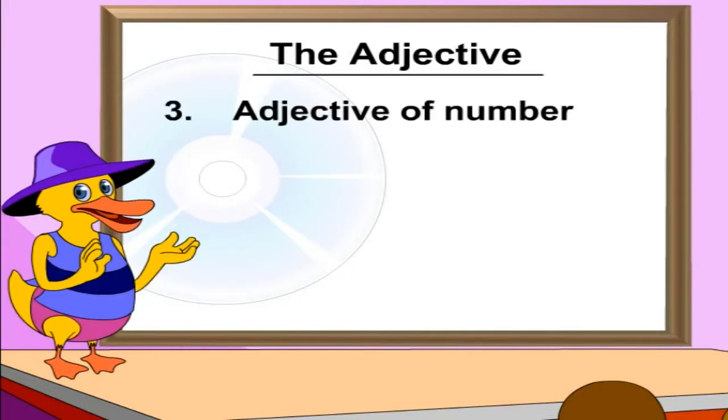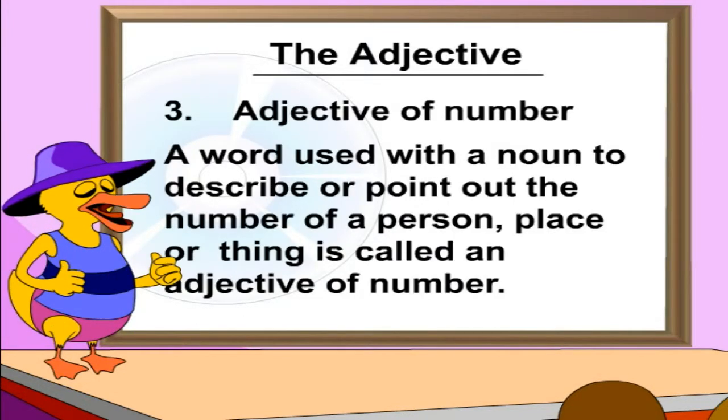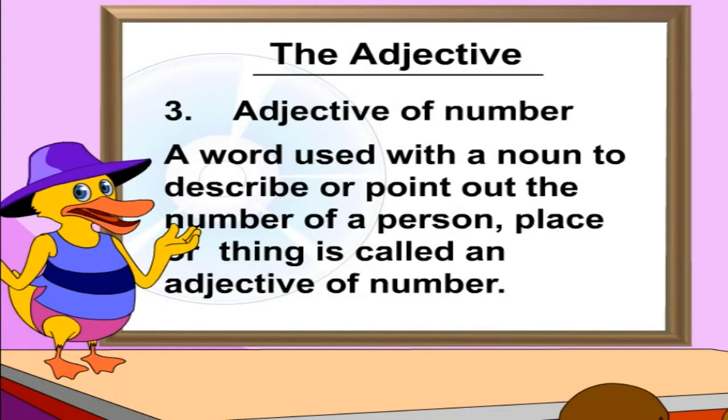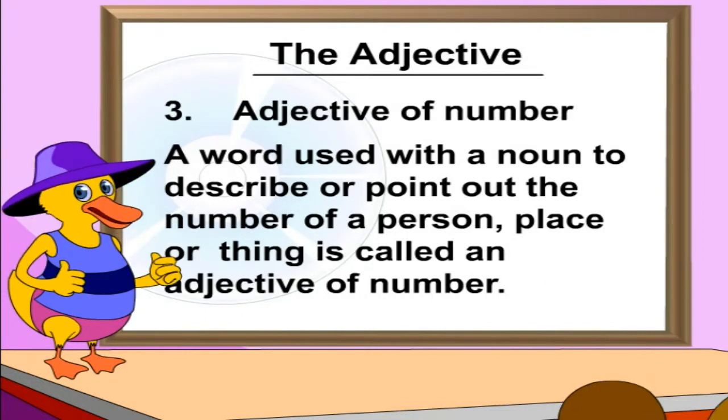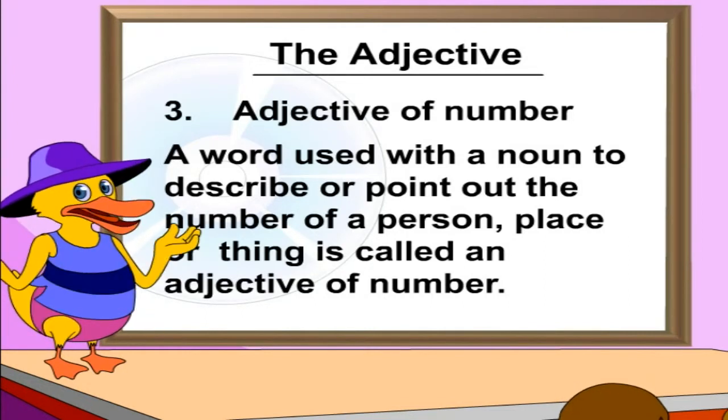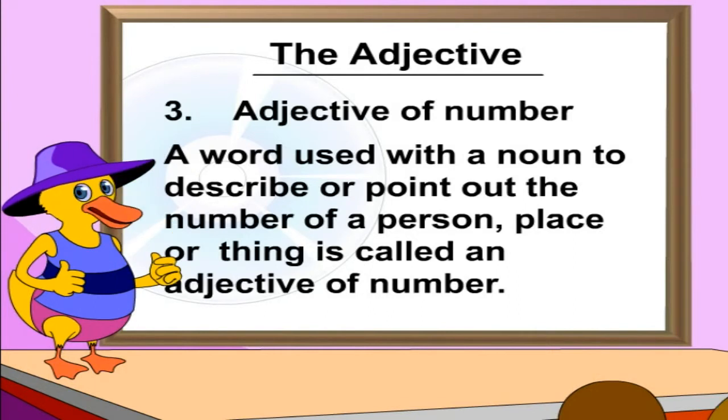3. Adjective of Number. A word used with a noun to describe or point out the number of a person, place or thing is called an adjective of number.